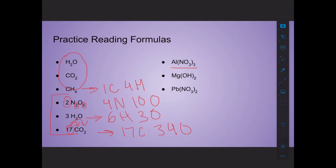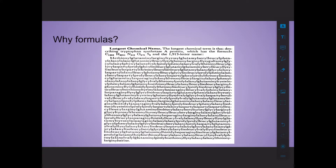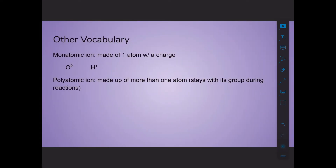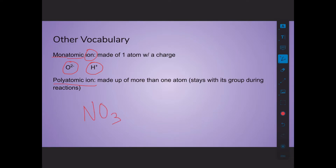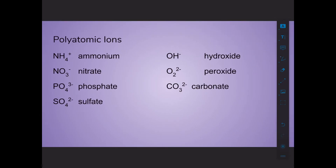Before we get to formulas with parentheses, let's get some vocabulary down. The reason we use formulas instead of full names is that giant compound names are a nightmare to say. Other vocabulary you need includes monatomic ion — atoms that have a charge. Mono means one, atomic means atom, ion means charge. So O²⁻ is a monatomic ion of oxygen. Then we have polyatomic ions, which are little clumps of atoms — like NO3⁻ — that stay together during a chemical reaction as one group, and they carry a charge as well.